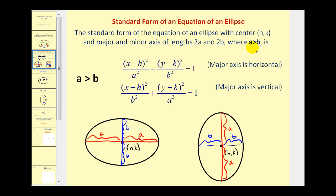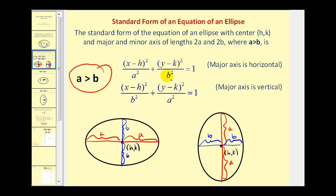One of the most important things we have to identify is whether the major axis is horizontal or vertical, and that's based upon the fact that a is always greater than b. So a squared is going to be the larger denominator. If the larger denominator is under the x part, the ellipse will have a horizontal major axis. If the larger denominator is under the y part, the major axis will be vertical. The largest denominator will be a squared, and the smaller denominator will be b squared.